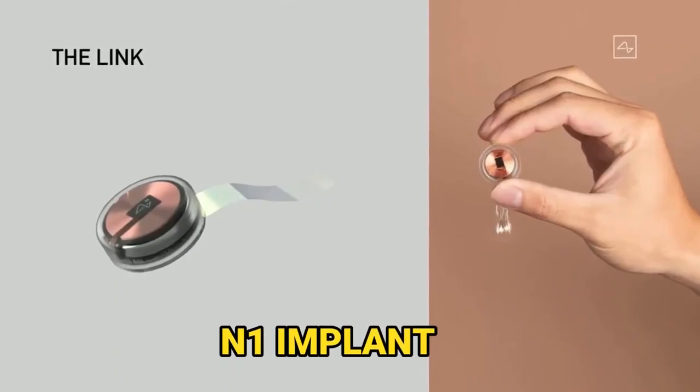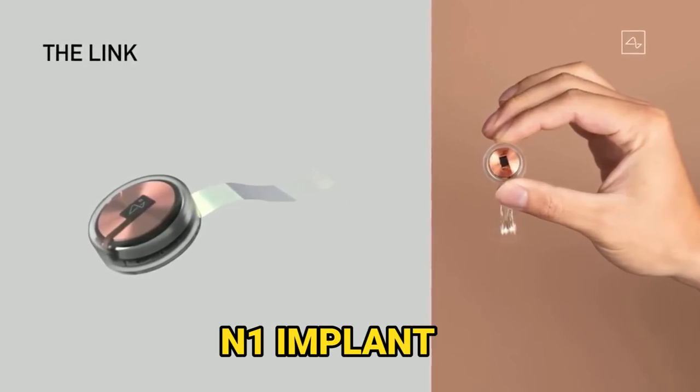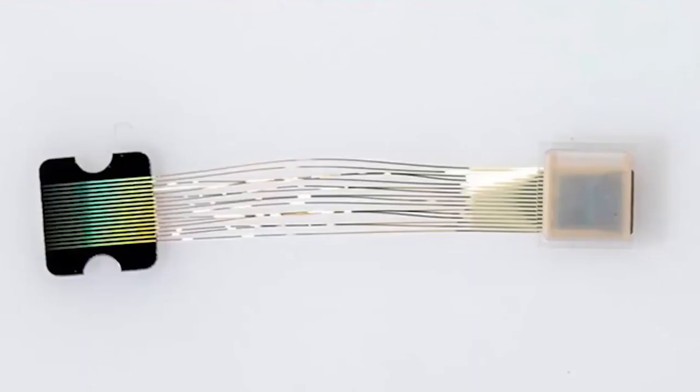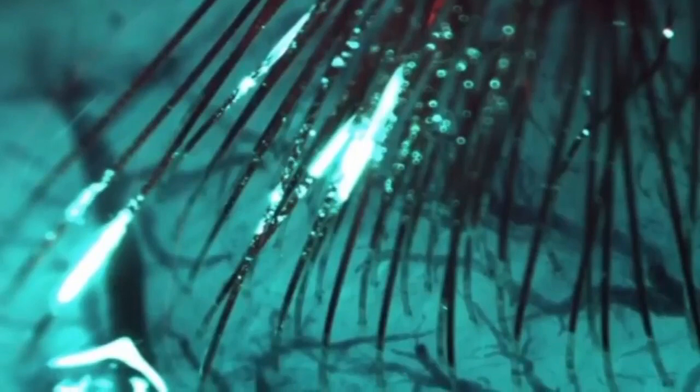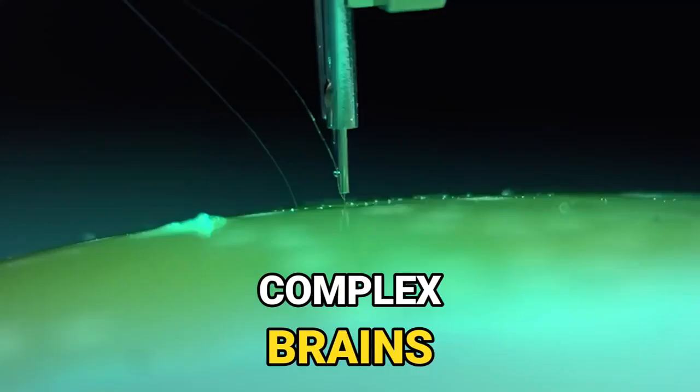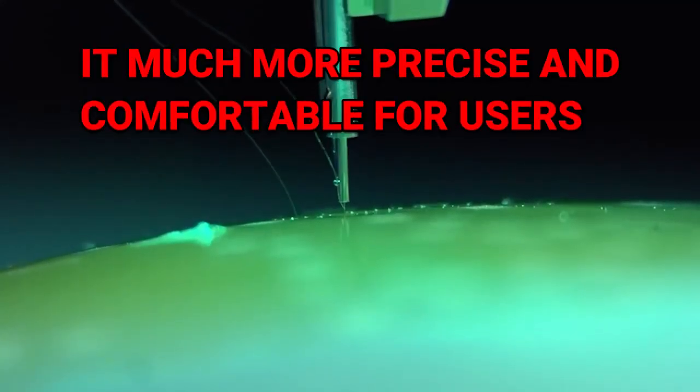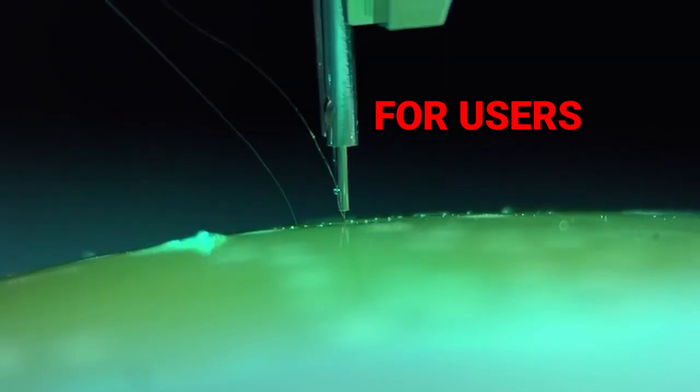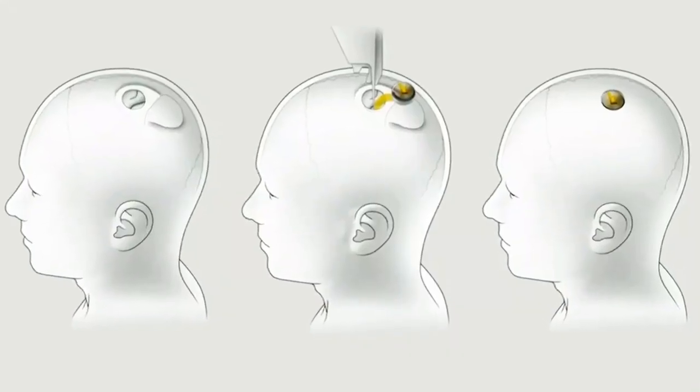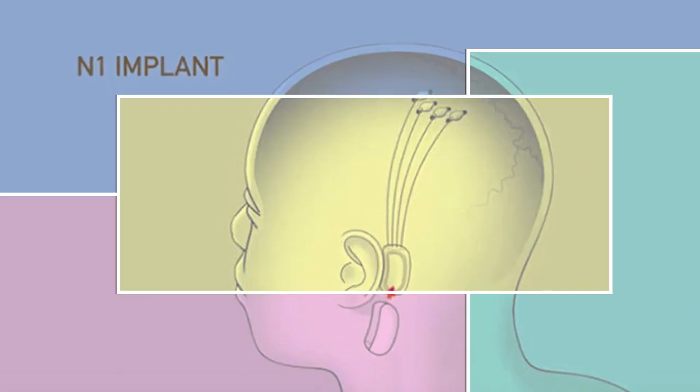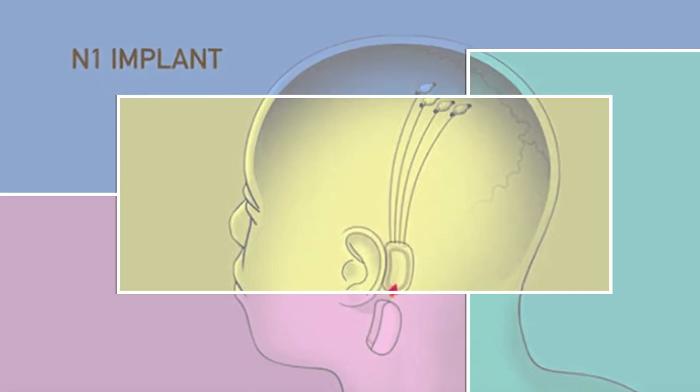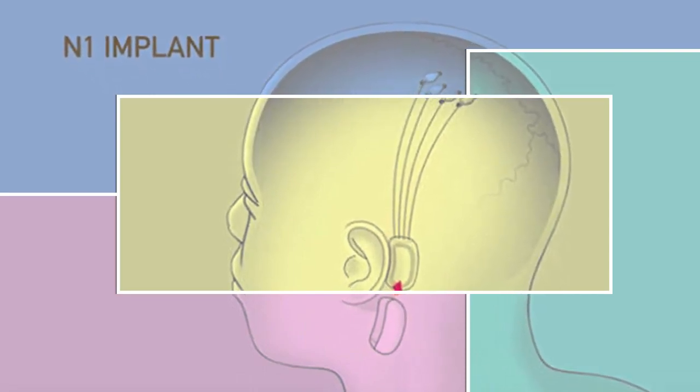The N1 implant takes a whole new approach to invasive brain-computer interfaces. It boasts flexible electrode wires that can navigate through the twists and turns of our complex brains, making it much more precise and comfortable for users. No more rigid and limited options here. And guess what? The N1 implant is more than just innovative in terms of flexibility. It's also wireless.